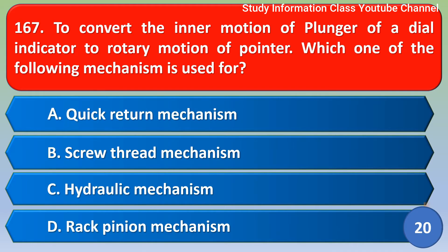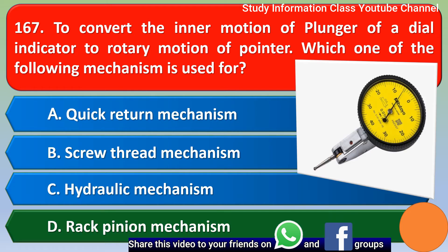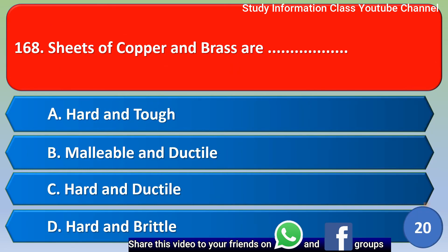Next question: to convert the linear motion of the plunger of a dial indicator to rotary motion of the pointer, which one of the following mechanisms is used? The correct answer is Option D — rack and pinion mechanism.